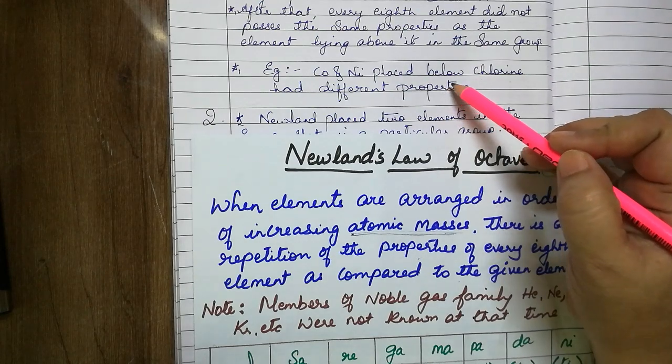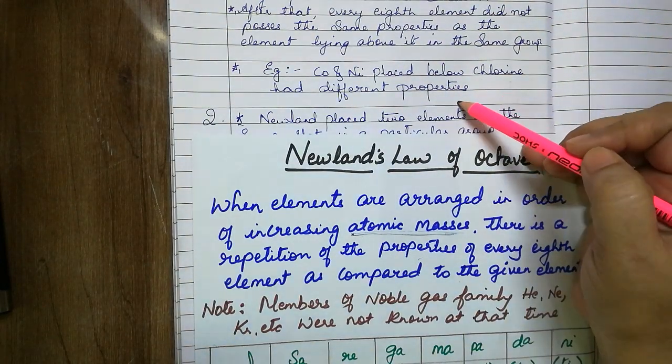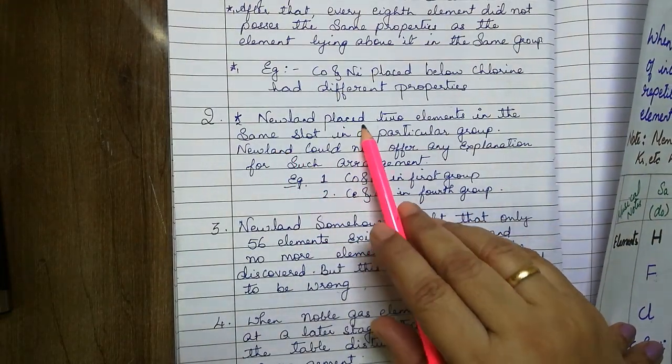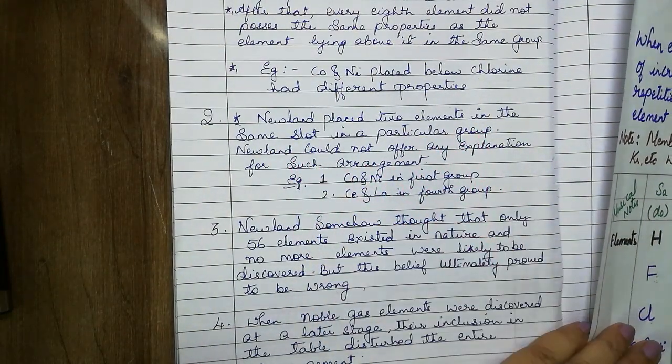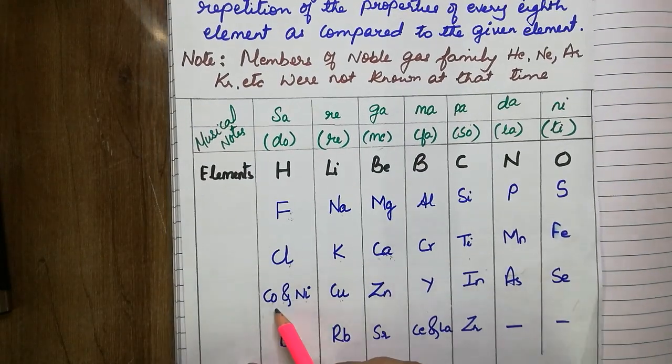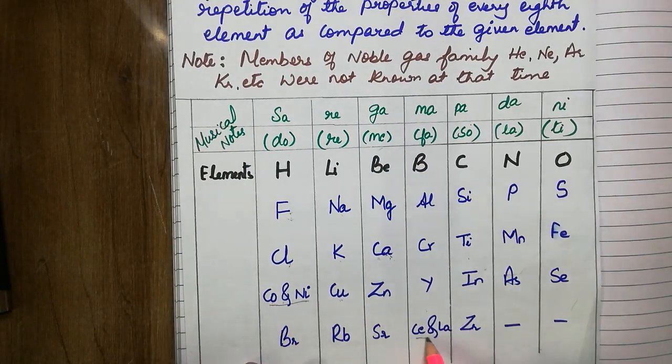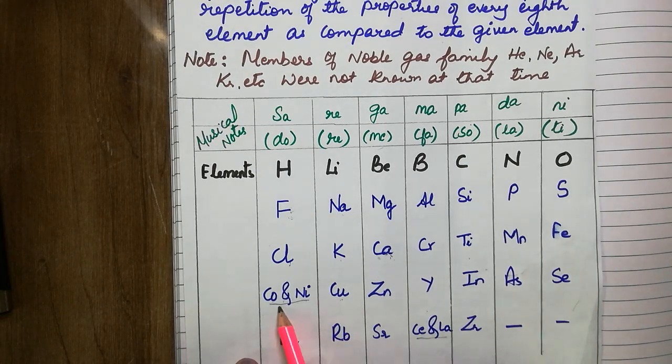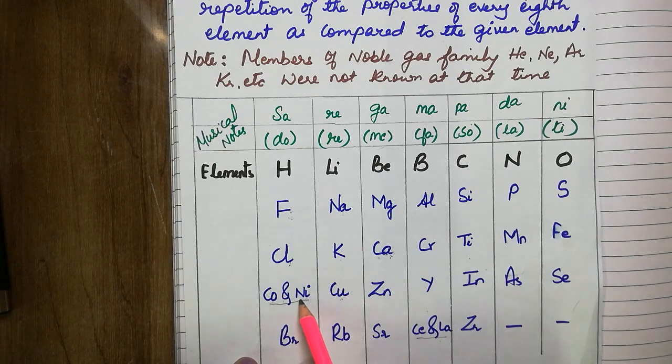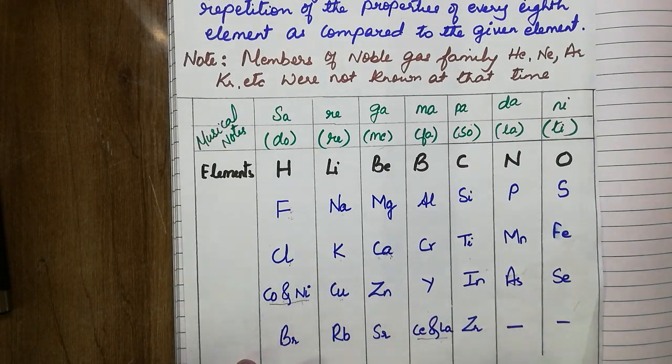You can add up here potassium and copper also have different properties. Then Newland placed two elements in the same slot. Here you can check, cobalt and nickel, cesium and lanthanum, they were placed, two elements in the same slot. For this he did not offer any explanation.